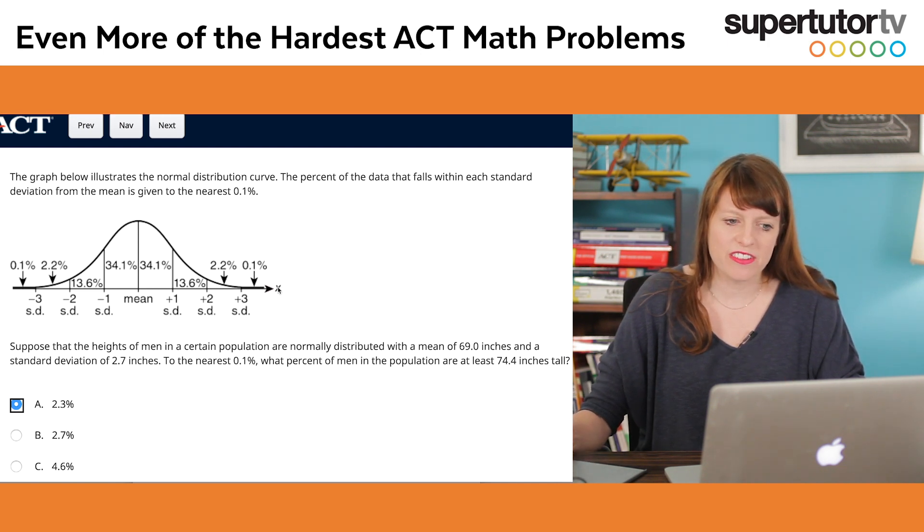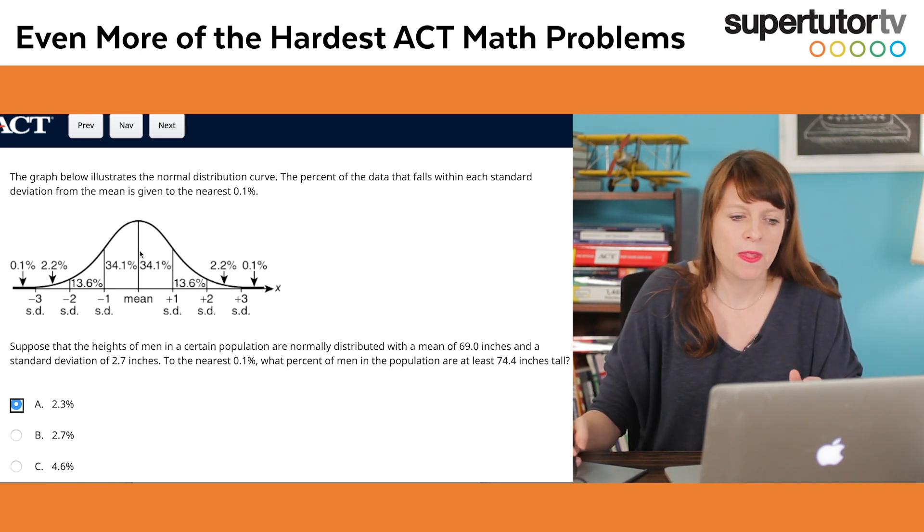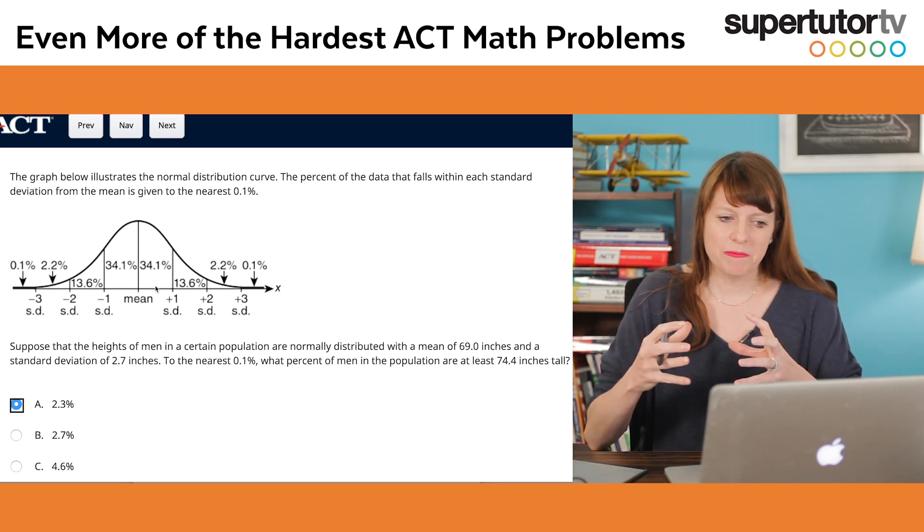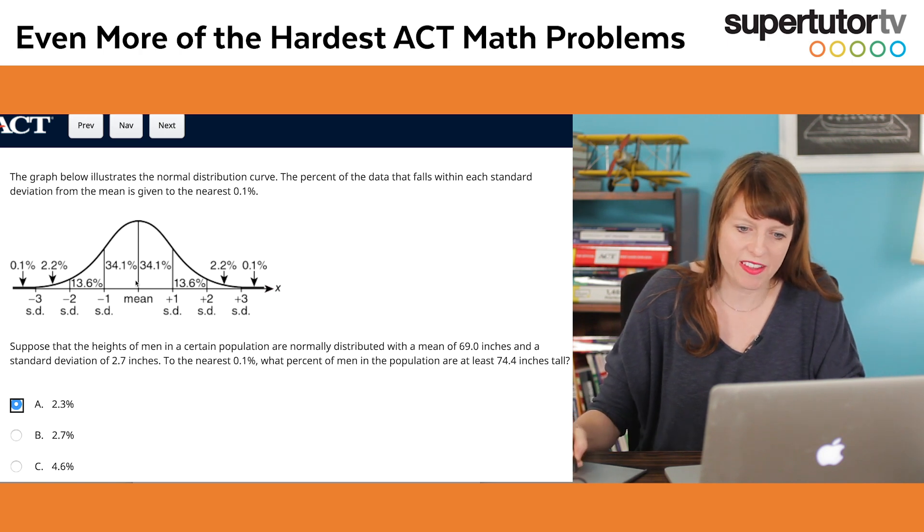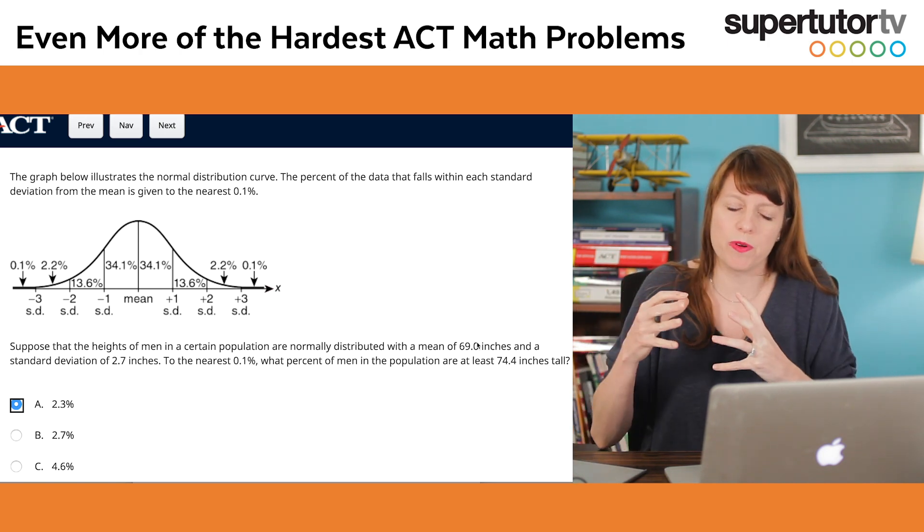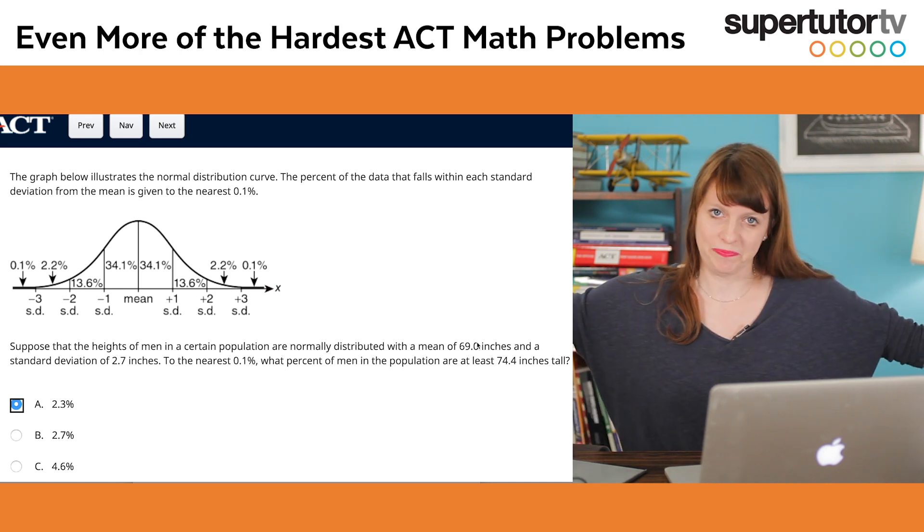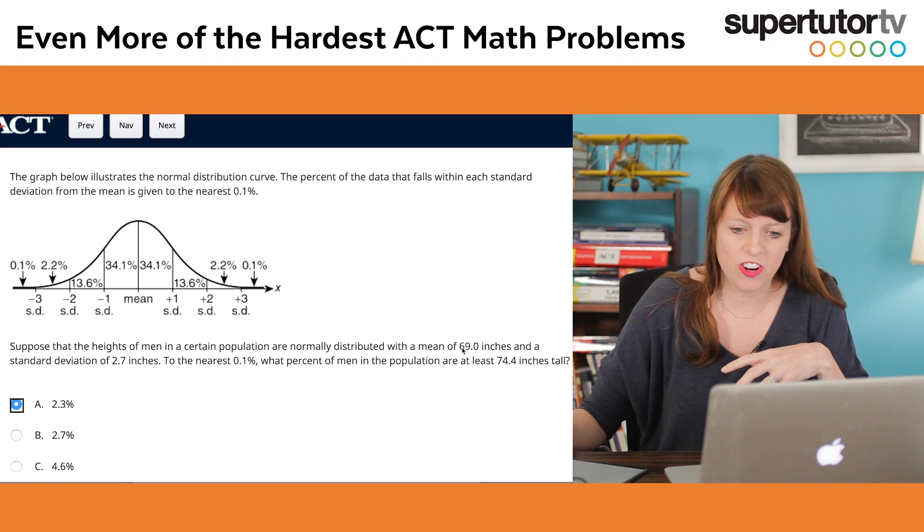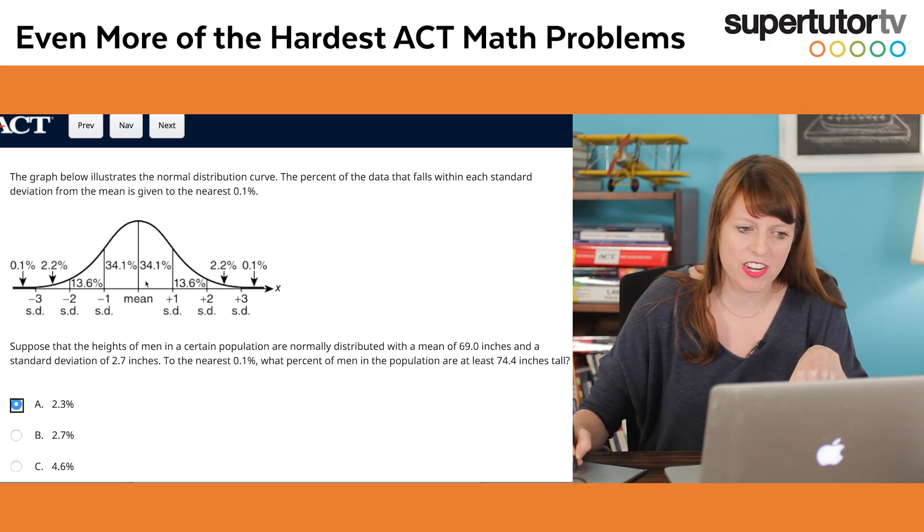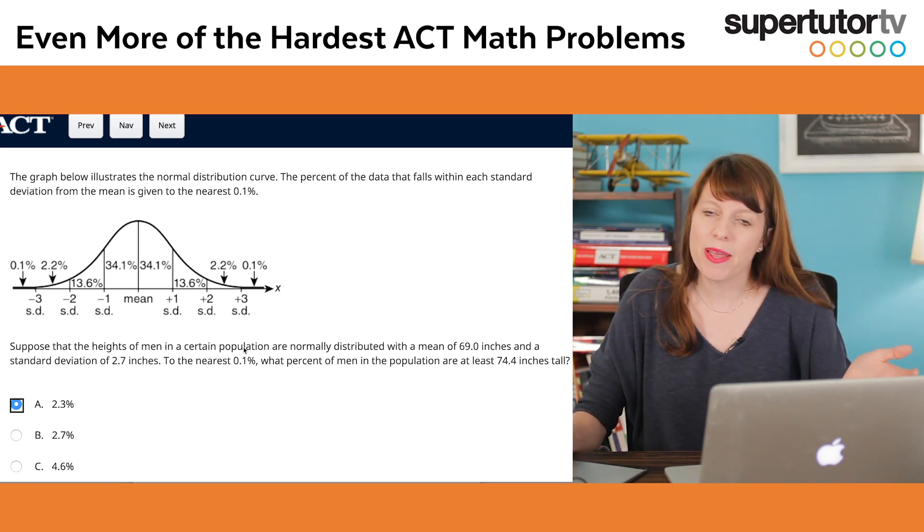And what standard deviation is, is it's a measure of how far apart the data are spaced. So when our data are really close together, our standard deviation is going to be smaller. Because instead of adding 2.7 inches to the mean, I'm going to be adding a smaller number to the mean. And when our data are spaced out more, our standard deviation is going to be bigger. When we have a normal distribution, it falls along this curve and we just add for each standard deviation. Hopefully that all makes sense to you guys.